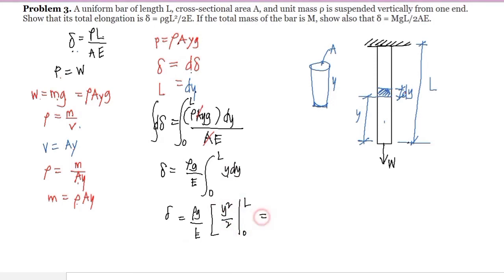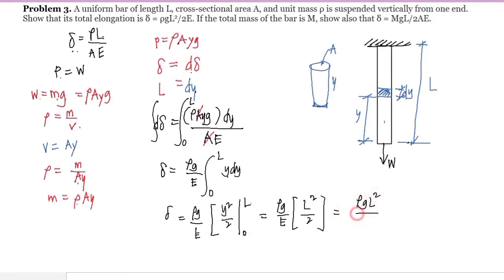Evaluating from 0 to L, we have rho·G over E multiplied by: the upper limit L gives L squared over 2, minus the lower limit 0. Simplifying, we have rho·G·L squared over 2E, which is exactly what we wanted to show. That is our final answer for the first part.